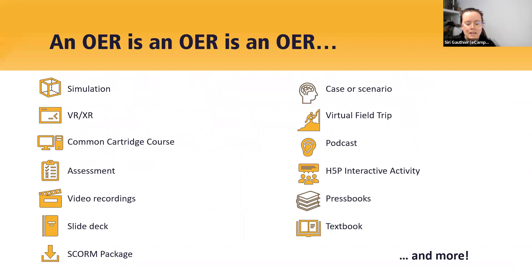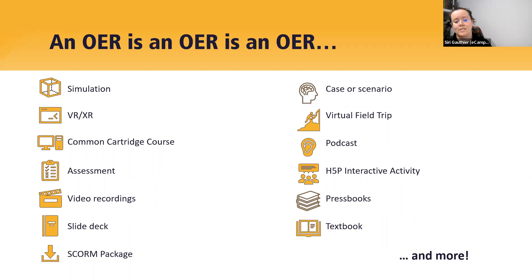Part of the conceit of this whole series is that we're not just focusing on books and manuals. Even though we've got over 1,200 items in the Open Library, we have a list of file and media types that continues to expand — from simulations to assessments, common cartridge courses, podcasts, textbooks, and even textbooks on how to make podcasts. An OER is not just a book, and part of what we're here to do is explore those different formats and hear from some creators.